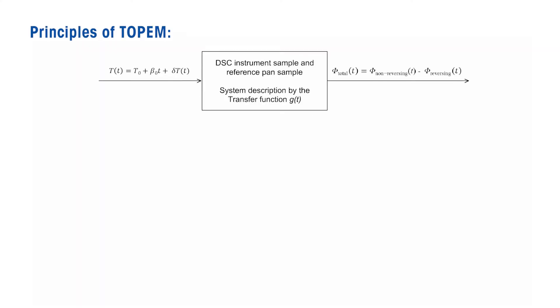A DSC measurement result contains information about the sample and about the properties of the instrument. These two pieces of information are not so easy to separate.